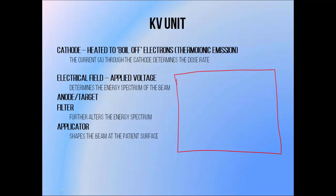We get these electrons from the cathode, which is basically a word that means something that electrons come from. In this case it's a wire through which we pass an electrical current — a current of electrons. In order to get electrons out of the cathode we heat it up, basically to shake them free into the vacuum tube. This is known as thermionic emission, which basically means heating something up in order to shake free charged particles.